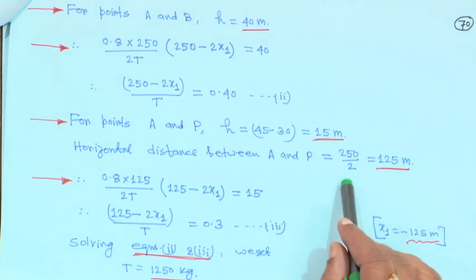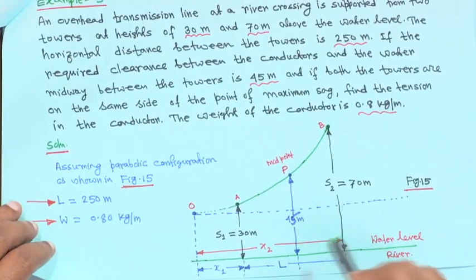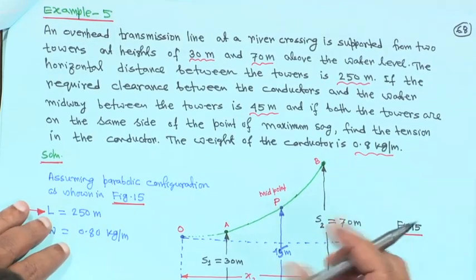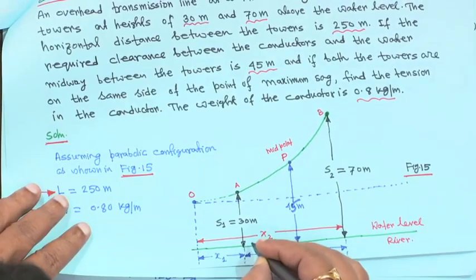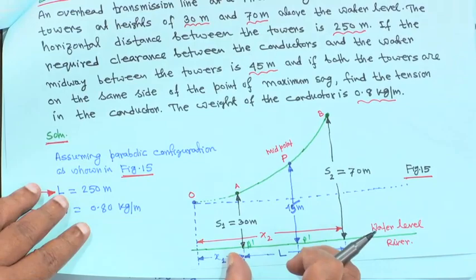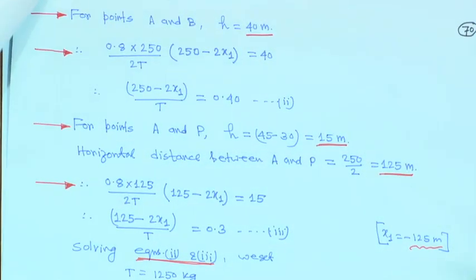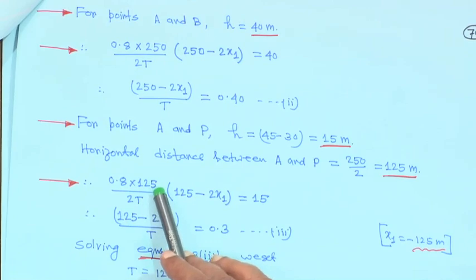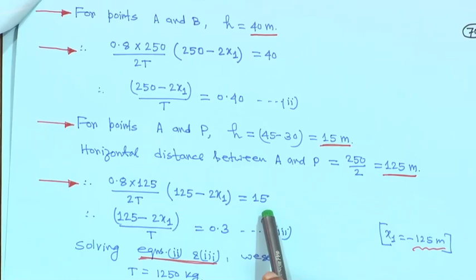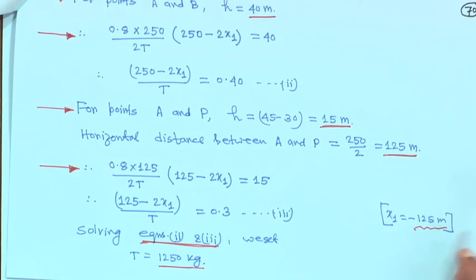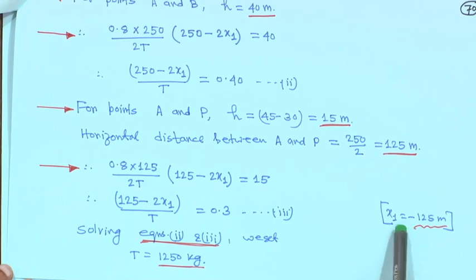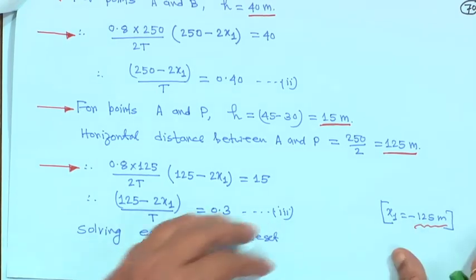The horizontal distance between A and P is 125 meter, since P is the midpoint of the total 250 meter span. Substituting in the equation: 0.8 upon 1 into 125 upon 2T, with (125 minus 2·x1) equal to 15. This gives (125 minus 2·x1) upon T equal to 0.3. Solving, T is equal to 1250 kg, and x1 comes out as minus 125 meter, confirming x1 is negative as expected.